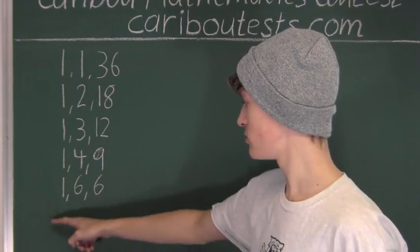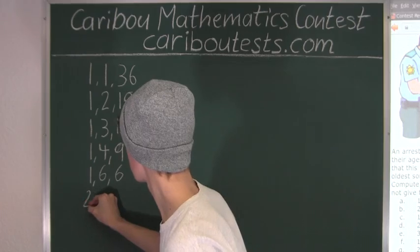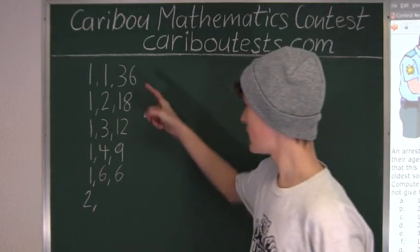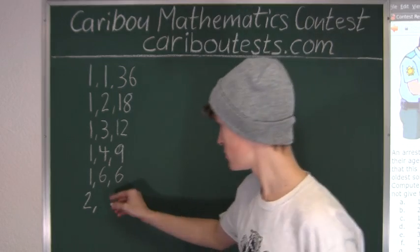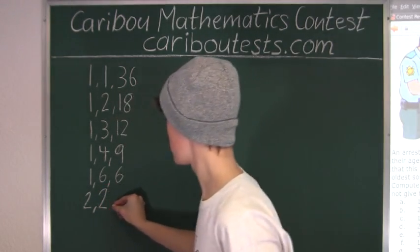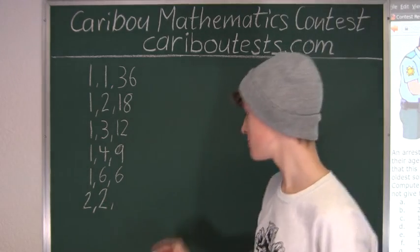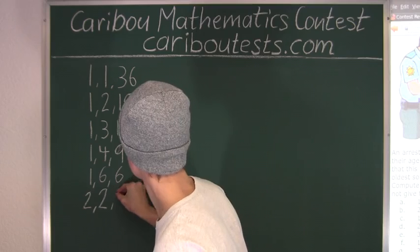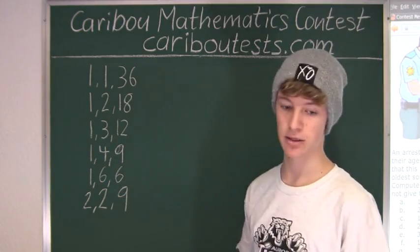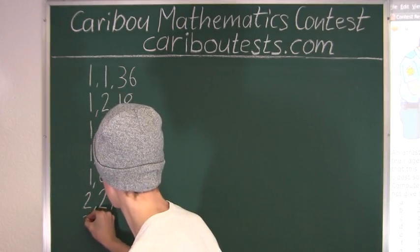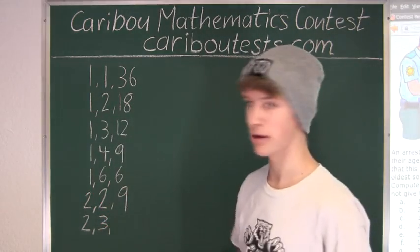Now, we will move on to 2. That's the next biggest factor of 36. 36 divided by 2 is 18. We need to find the next biggest factor of 18, but we can write 2 again because they can be of the same age. And then 18 divided by 2 is 9. The next biggest factor of 18 is 3. And then 18 divided by 3 is 6.